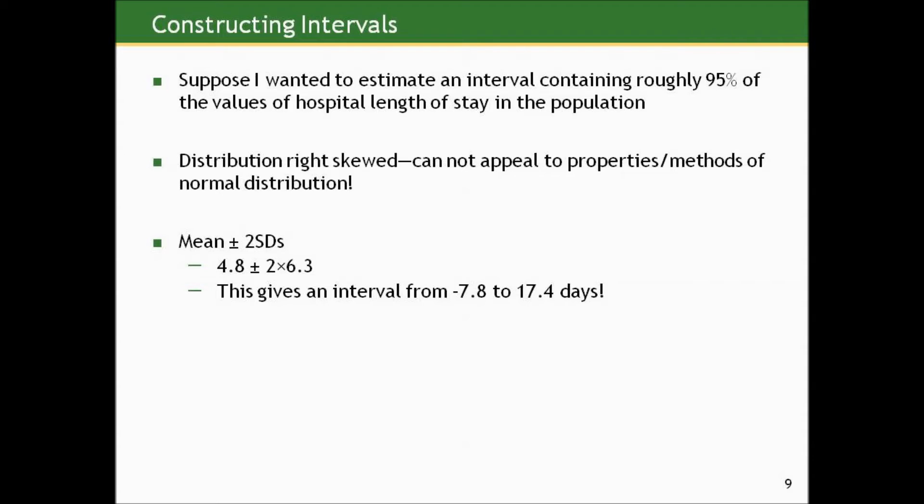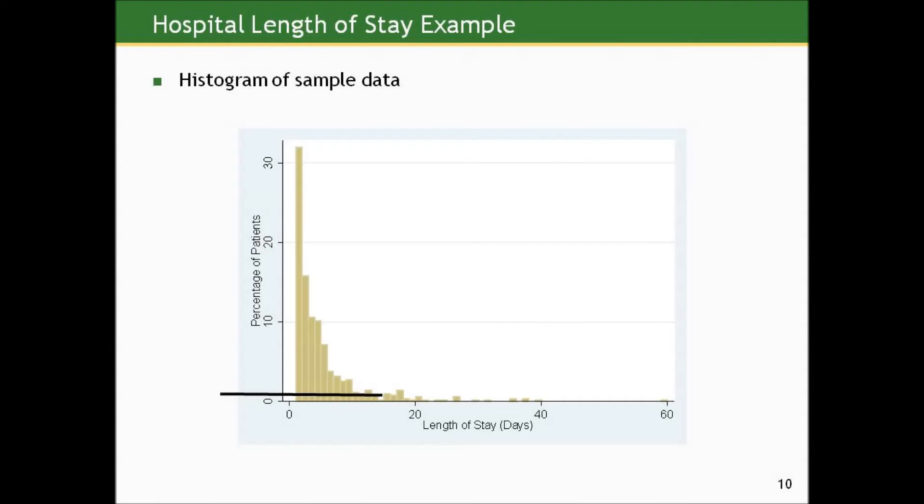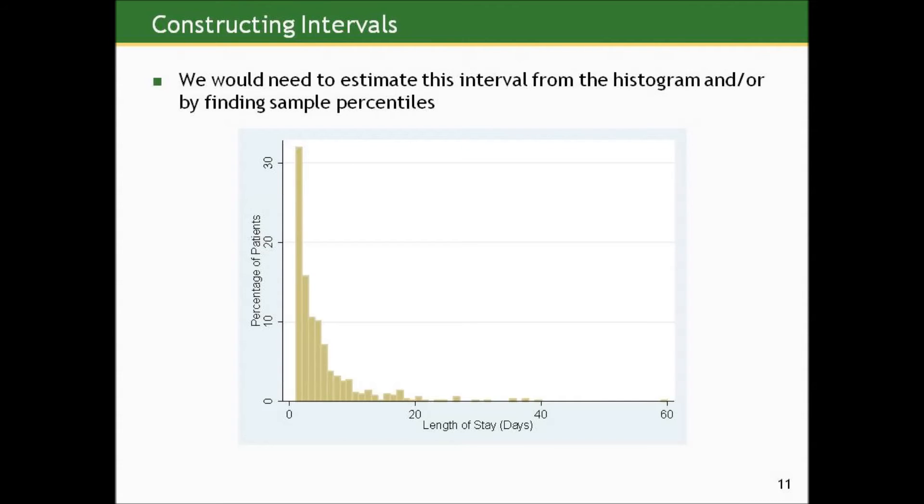Does that make any sense? Well, length of stay is something that can never be negative, and certainly not to the extremity of negative 8. If you ever have a negative length of stay, then you expect the hospital to send you money. So let's just go back on this histogram. You can see that that interval includes a lot of points outside the real realm of the data and includes impossible values.